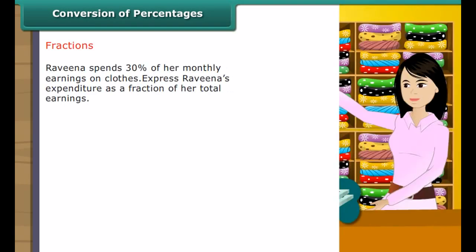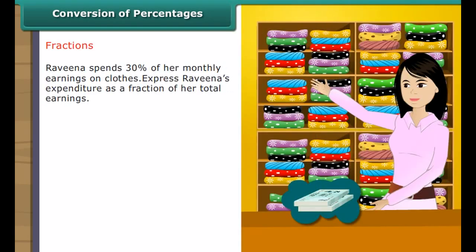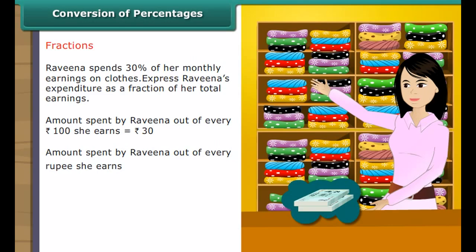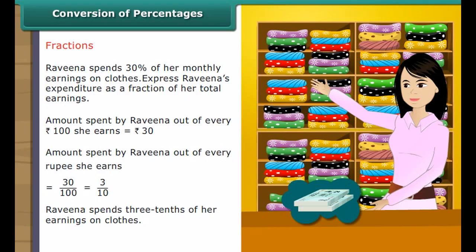Fractions. Raveena spends 30% of her monthly earnings on clothes. Express Raveena's expenditure as a fraction of her total earnings. Amount spent out of every Rs. 100 she earns is Rs. 30. Amount spent as a fraction equals 30/100, which equals 3/10. Raveena spends 3 tenths of her earnings on clothes.